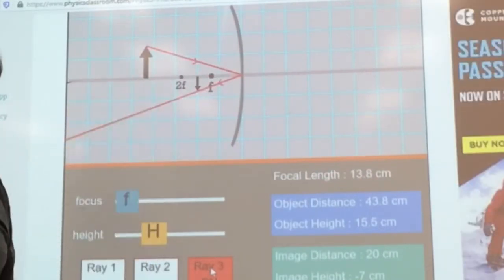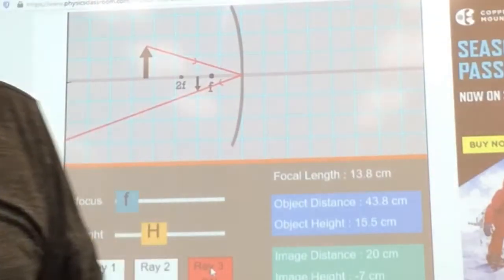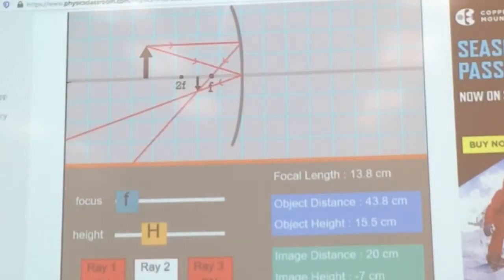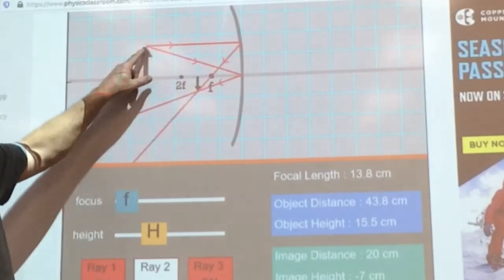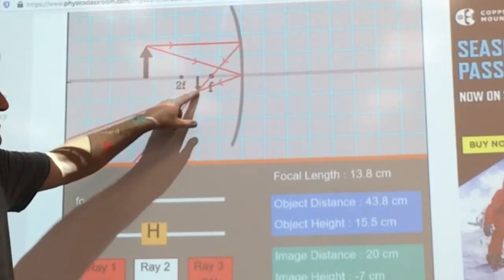So where those two rays meet is where the image will appear. So let's put the first ray back on there, and you notice, boom, they join right there. Since they came from the tip of the arrow, that'll be the tip of the arrow.